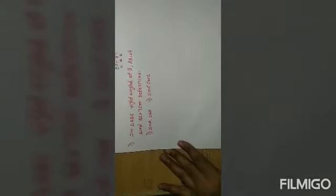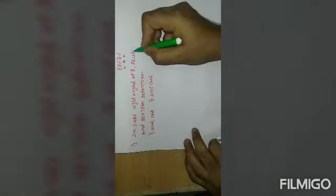I am going to explain 8.1 first question from the NCERT. In triangle ABC, right angle at B, AB equals 24 centimeters, BC equals 7 centimeters. We need to determine sine A, cos A, sine C, cos C.